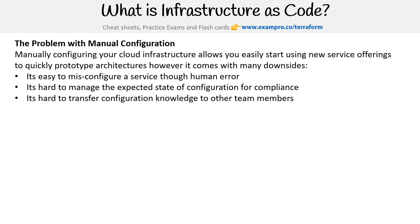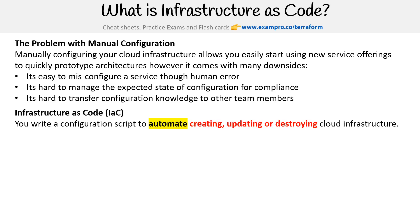It's hard to transfer configuration knowledge to other team members. And so this is why infrastructure as code is really going to help us out. Infrastructure as code, commonly abbreviated to IAC — and you'll see that a lot in this course — allows you to write a configuration script to automate creating, updating, or destroying cloud infrastructure. Automation is really key to infrastructure as code.